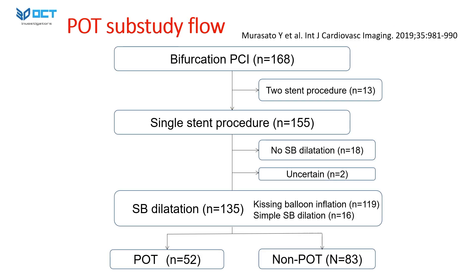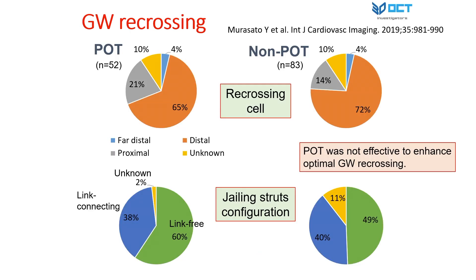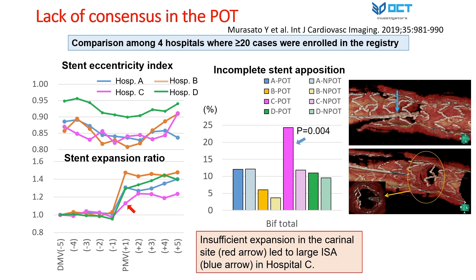We conducted another study comparing POT versus non-POT. In terms of guidewire recrossing, the POT group succeeded in distal wiring on first attempt in 65% versus 72% in the non-POT group. Proximal cell recrossing: 21% versus 14%. In terms of j-ring strut configuration pattern, link-free type was 60% versus 49%; however, there were no significant differences between the two groups. Therefore, in this study, POT was not effective to enhance optimal guidewire recrossing. We then investigated the manner of POT in the leading four hospitals in this study.